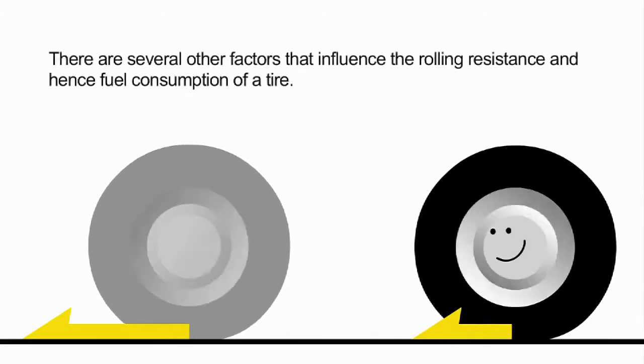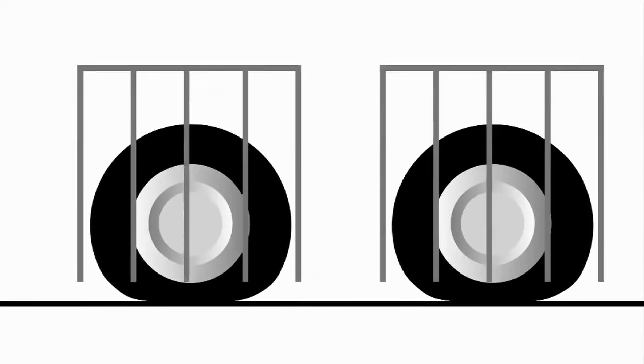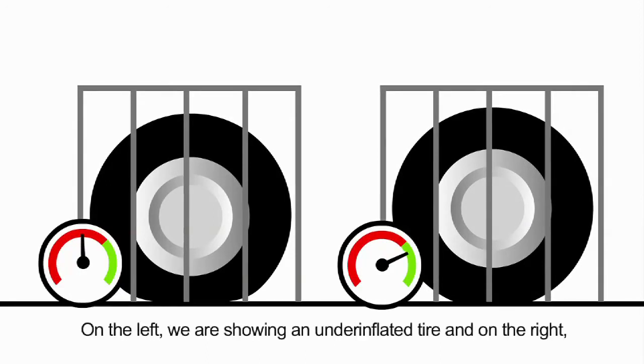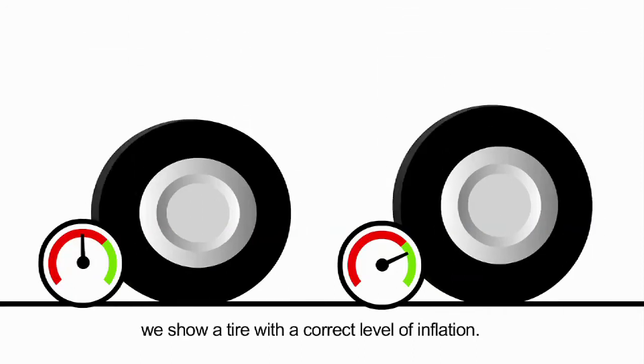There are several other factors that influence the rolling resistance and hence fuel consumption of a tire. First, let's talk about air pressure. On the left, we are showing an under-inflated tire, and on the right, we show a tire with the correct level of inflation.